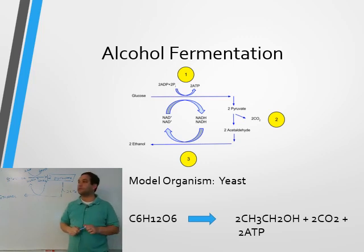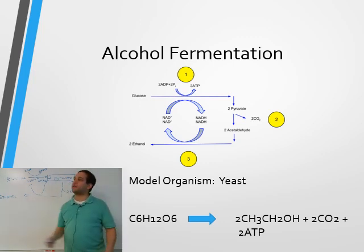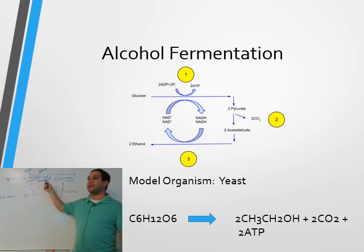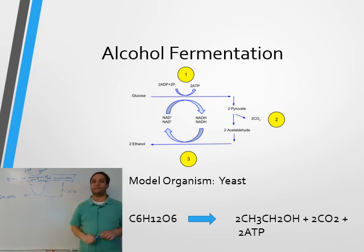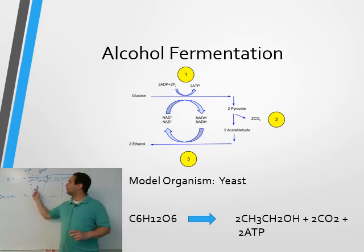This is what yeast does: takes the pyruvate, cuts off carbon dioxide, and produces ethanol. It's turning NADH back to NAD+. Because without NAD+, you don't get any ATP. Yeast cuts carbon dioxide off, recovers NAD+, and produces ethanol.